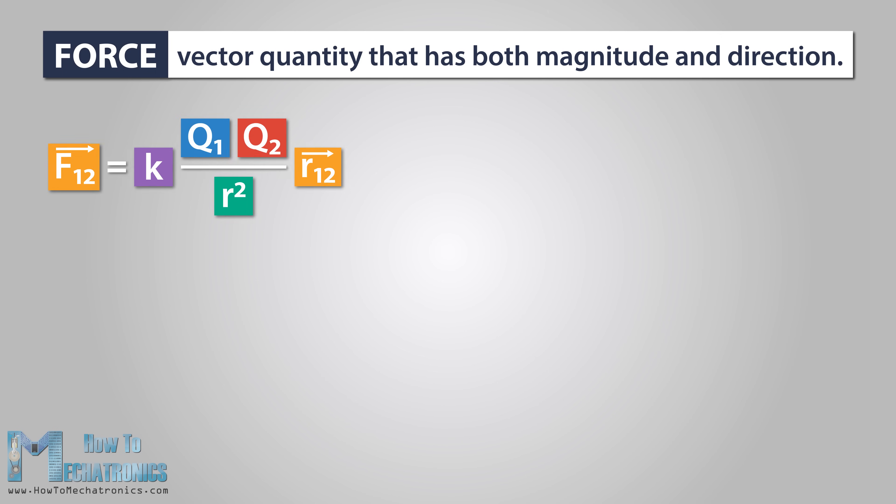Being a force, the strength of the electrical interaction is a vector quantity that has both magnitude and direction. This means that we can calculate the magnitude and direction of the electric field based on the sign of the result. Let's modify the equation.